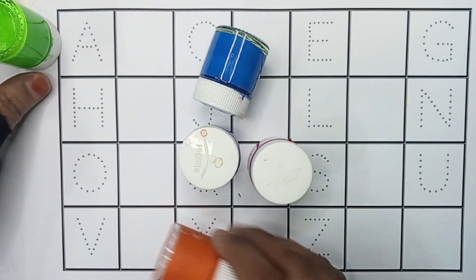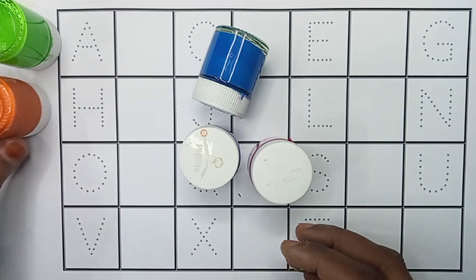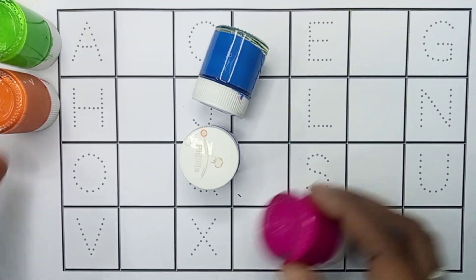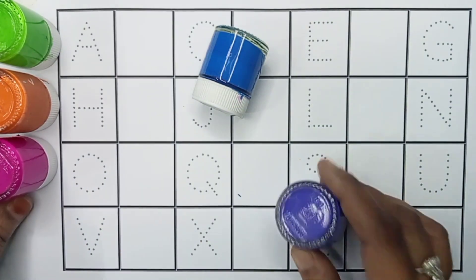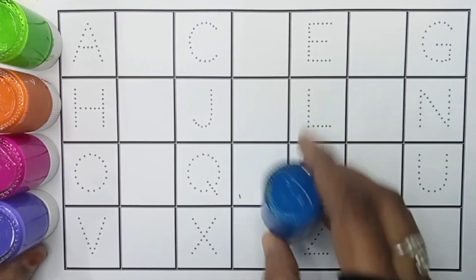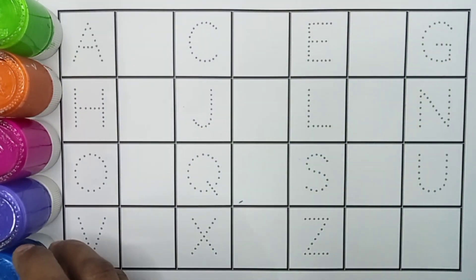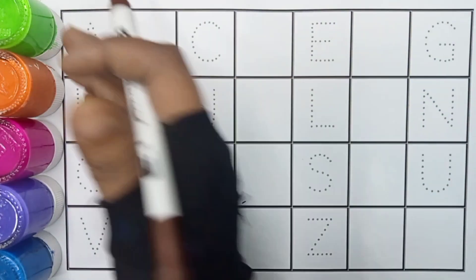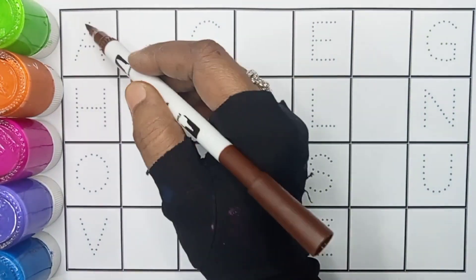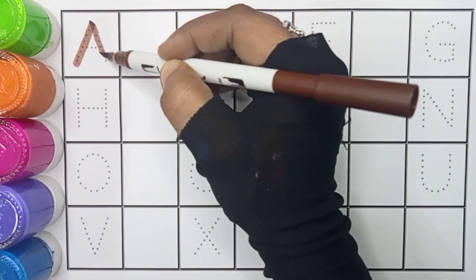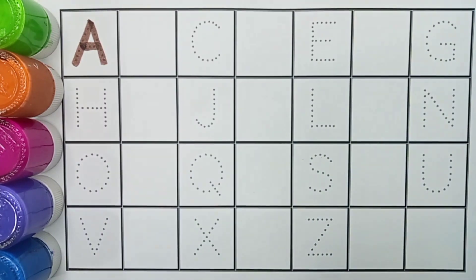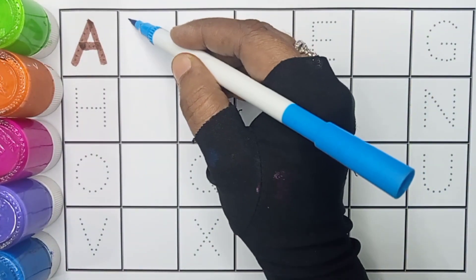Green color, orange color, pink color, purple color, blue color, brown color. A, A for apple. Blue color. B, B for balloon.